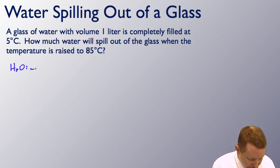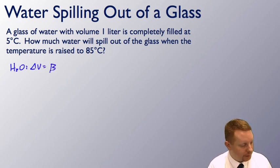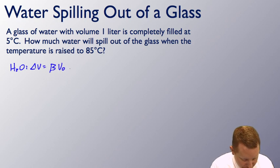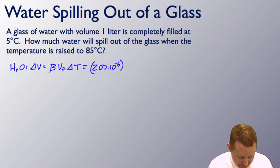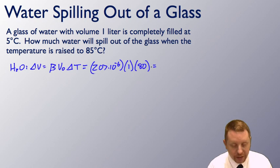Let's start with the water. For our water, we know the change in volume is going to be our volumetric coefficient of expansion, beta, times our initial volume, times our change in temperature, where beta for water is 207 times 10 to the minus 6, times V initial, 1 liter, times our change in temperature, 80 degrees C, gives me a change in volume of about 0.0166 liter.